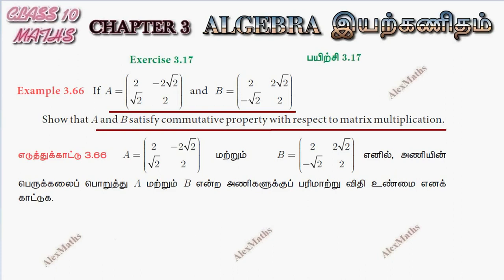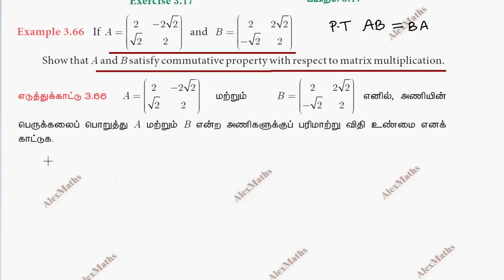What we need to prove is AB equal to BA. So A and B are given. A has order 2 rows 2 columns, B has order 2 rows 2 columns. Since the two numbers are the same, matrix multiplication is possible.